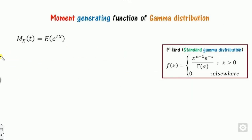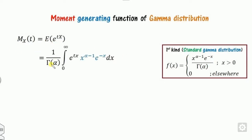Now we can see how we can derive the moment generating function. I will derive it for both kinds. Firstly, I will show how to derive for the standard gamma distribution. The moment generating function is defined as the expected value of e raised to power tx. Since this is a continuous distribution, it is the integral of e raised to power tx times f(x). We substitute the value of f(x) and since the exponents are both exponential, we can combine them.